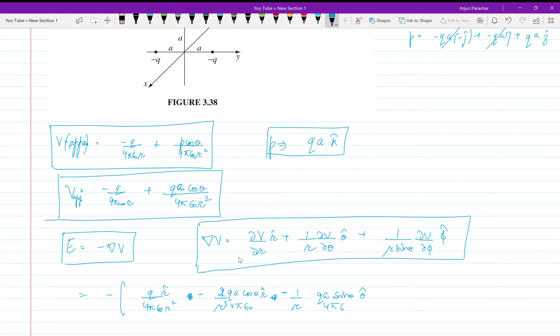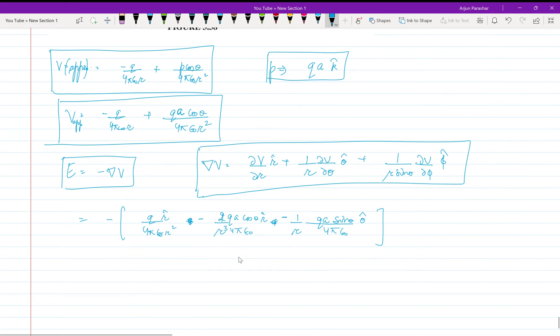One upon 4 pi epsilon naught. The phi term is not present here in the potential, so we'll not get any phi term. The approximate electric field with respect to R and theta is Q R cap upon 4 pi epsilon naught R. One negative sign from here and one negative sign from here will become positive - R squared plus 2 Q a upon 4 pi epsilon naught R cubed, common.